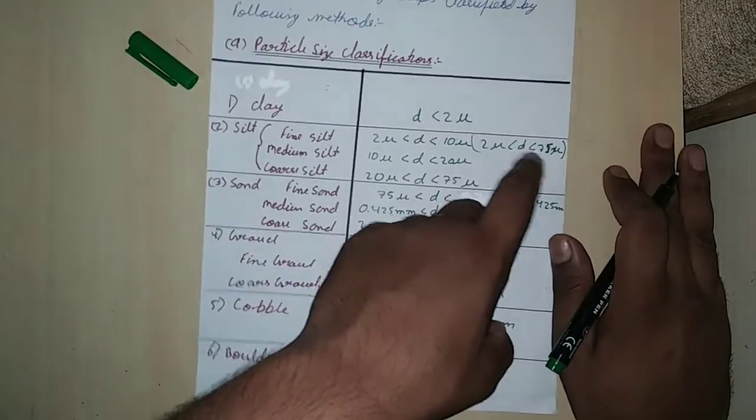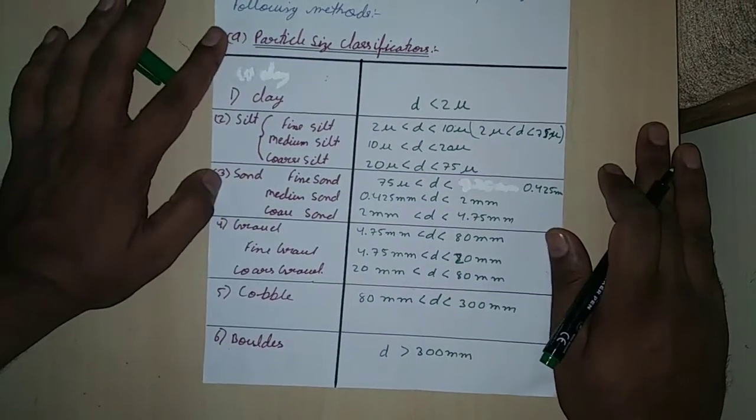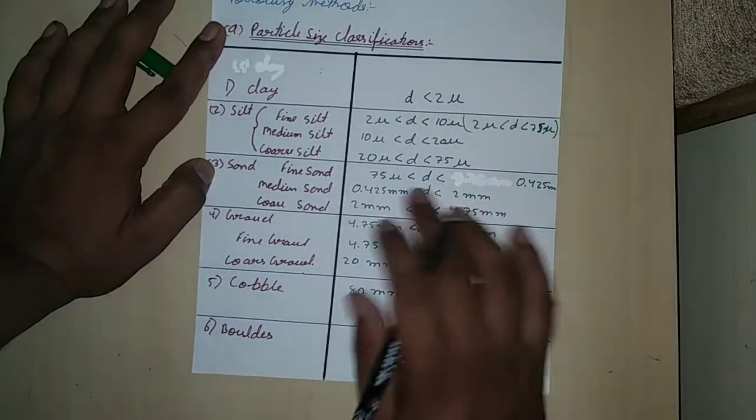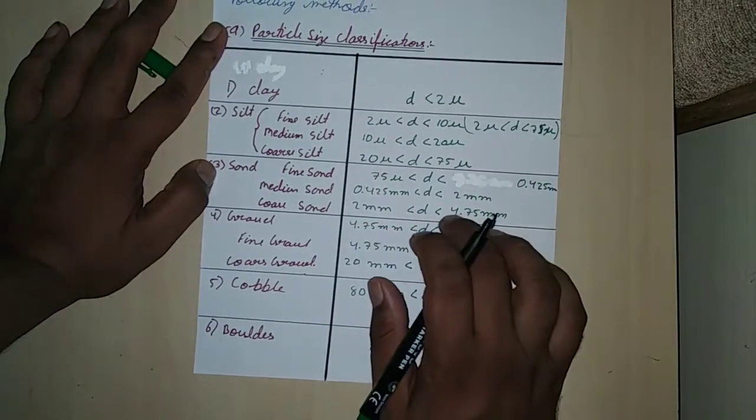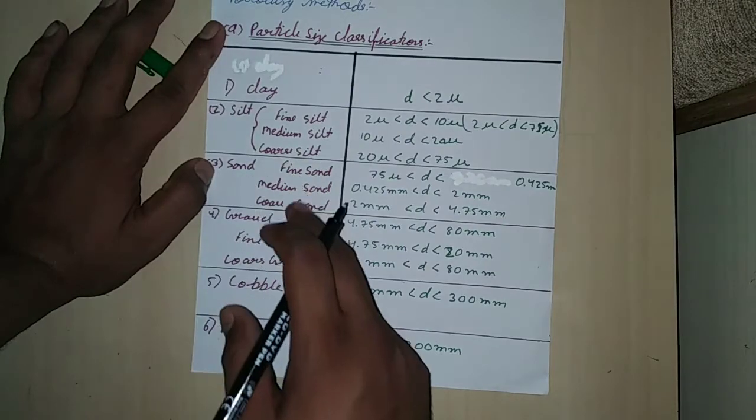From 2 microns, we have silt, and then sand. Sand is classified as fine, medium, and coarse.